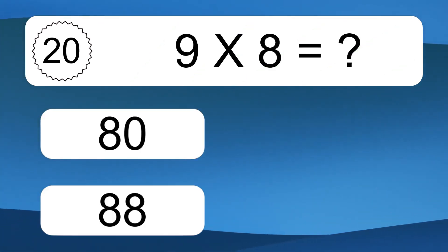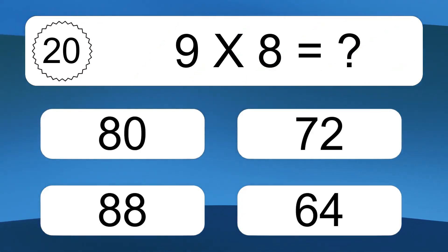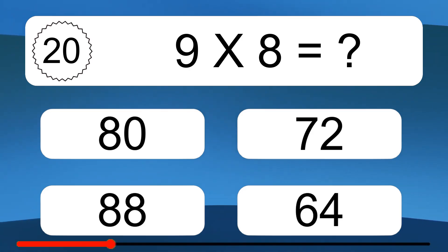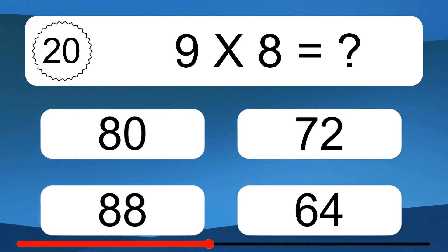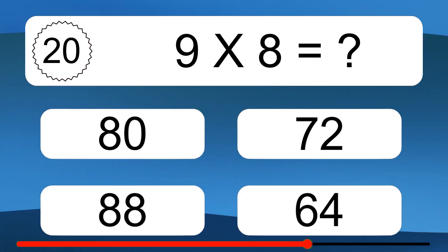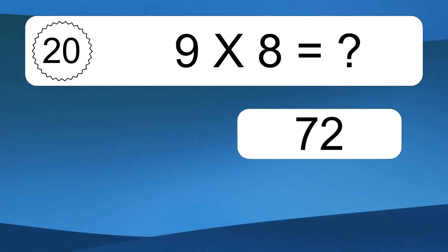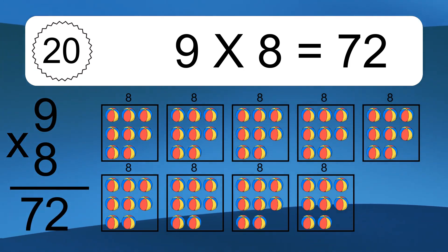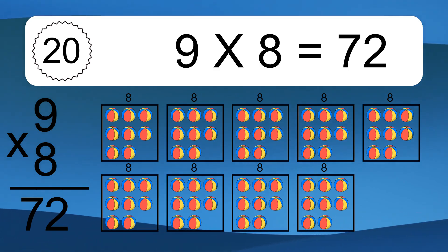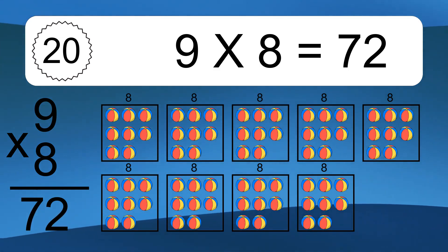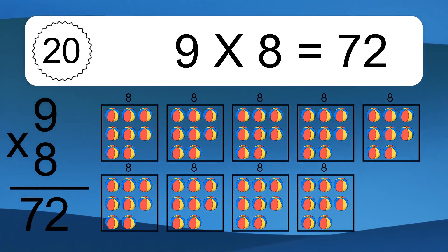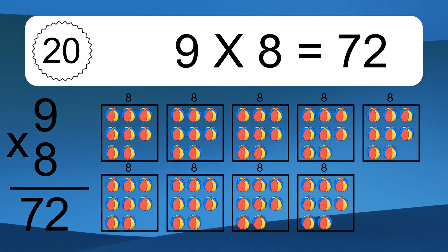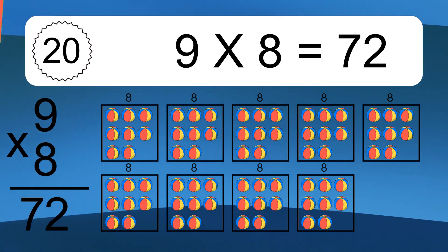9 times 8 equals what? 9 times 8 equals 72. We have 9 boxes, and each box has 8 colorful balls inside. If you count all the balls in all the boxes together, you will have 9 times 8 balls. This equals 72 balls.